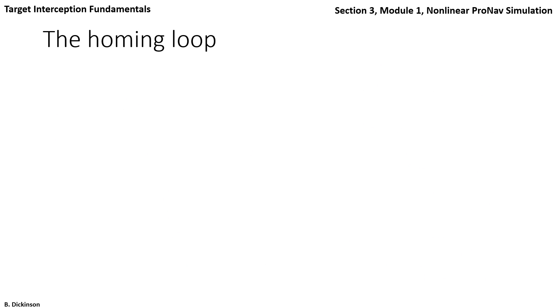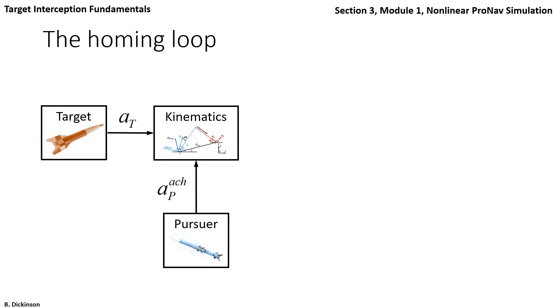Okay, now the homing loop. Consider the target and pursuer. Both can accelerate, right? So that gives rise to some kinematics, some evolving geometry. That evolving geometry is sensed by a seeker subsystem. A common type of active seeker is a radar seeker. It emits electromagnetic energy that's reflected off of the target and then received by the seeker again itself. A radar seeker can quantify line of sight rate and closing velocity for use in true proportional navigation.